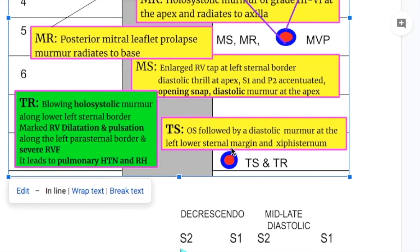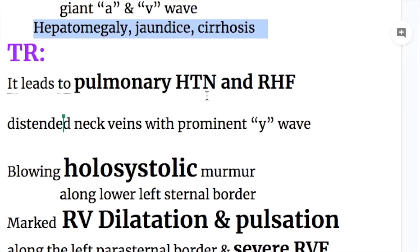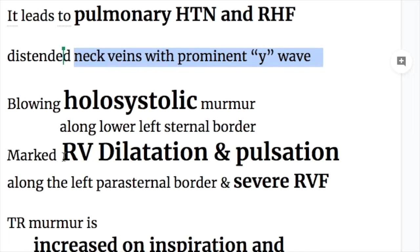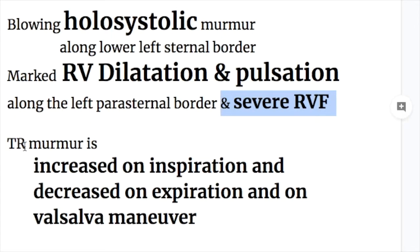In tricuspid regurgitation, the murmur is at the left lower sternal border, the same location as in tricuspid stenosis. It is a blowing holosystolic murmur along the left lower sternal border. There is marked right ventricular dilatation and pulsations along the left parasternal border, with severe right ventricular failure. Tricuspid regurgitation leads to pulmonary hypertension and right heart failure, with distended neck veins and a prominent Y descent. Like the tricuspid stenosis murmur, it is increased on inspiration and decreased on expiration and with Valsalva maneuver.